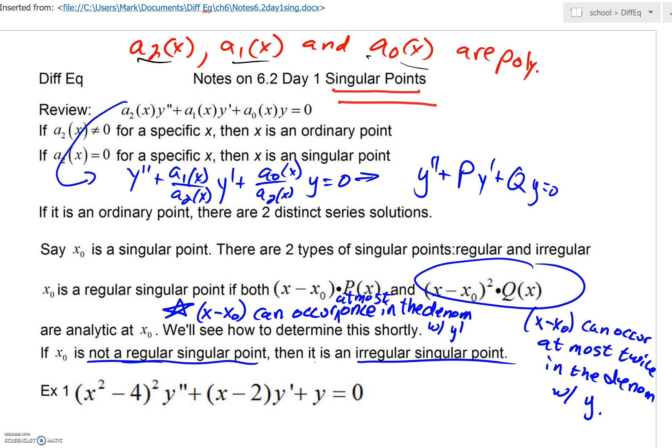a₂, a₁, and a₀ are all polynomial functions of x, and these are the coefficients of y double prime, y prime, and y respectively. So if that leading coefficient function, if a₂(x) is not equal to 0 for a specific x value, then x is just referred to as an ordinary point.